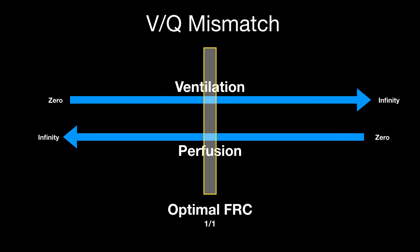What would occur if you have infinite perfusion and zero ventilation? That's shunt. Shunt occurs in congenital heart disease when there's a hole in the heart, because you have all of this blood flow going through the septum and none of it going through the lungs where ventilation occurs. This can also happen in some lung diseases where you have lots of blood flow but no ventilation. Remember, shunt doesn't respond to oxygen because there's no ventilation at all.